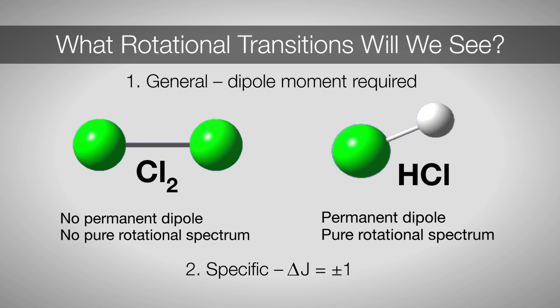Just like vibrations, rotations have general and specific selection rules. The general selection rule for rotational spectroscopy is that molecules must have a permanent dipole moment. Molecules like chlorine will not have a pure rotational spectrum, whereas molecules like HCl will have a rotational spectrum. The specific selection rule for rotations is delta J equals plus minus one. Unlike vibrations, we usually do not see this selection rule relaxed. For our experiment, we'll see this rule as followed.